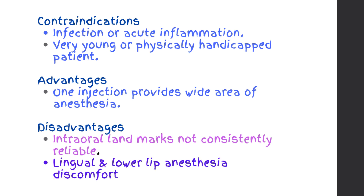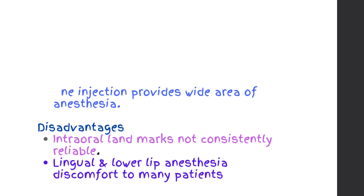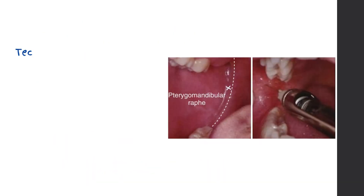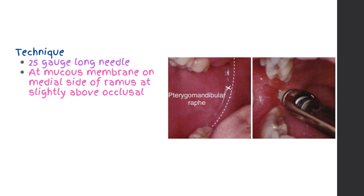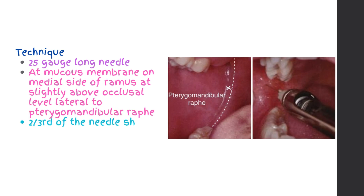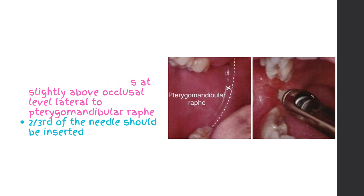Lingual and lower lip anesthesia causes discomfort to many patients. Technique: 25 gauge long needle. Insertion at mucous membrane on the medial side of the ramus, at slightly above occlusal level, lateral to the pterygomandibular raphe. Two-thirds of the needle should be inserted.